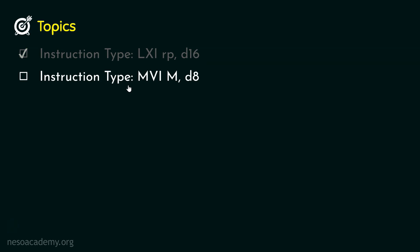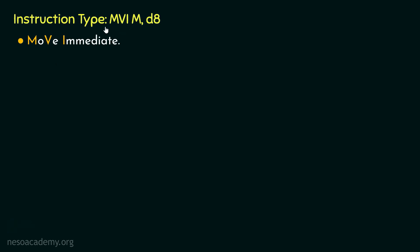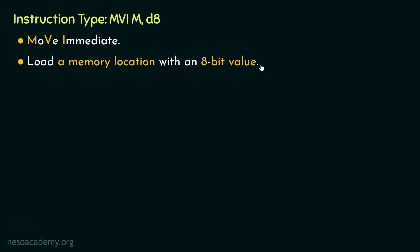Let's now learn about the next instruction type, MVI M,D8. The mnemonic MVI stands for Move Immediate, and using these type of instructions we are going to load a particular memory location with an 8-bit value. In this instruction, we don't have to mention any register — the 8-bit data will directly be loaded to the memory location.